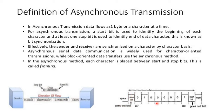In asynchronous transmission mode, the frame structure is: first a start bit, then data bits D0 through D7 — totalling 8 bits of data — followed by a stop bit. This is the asynchronous transmission mode.